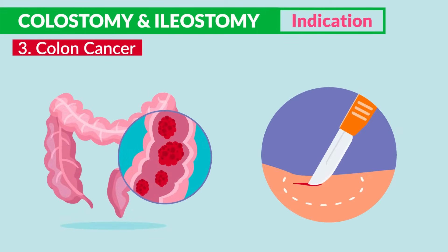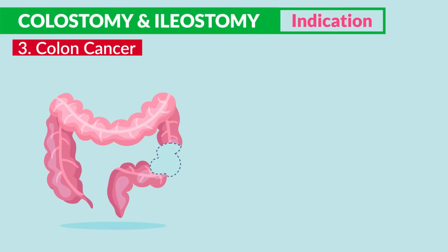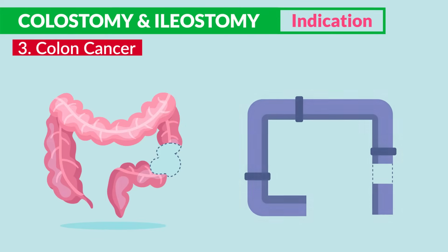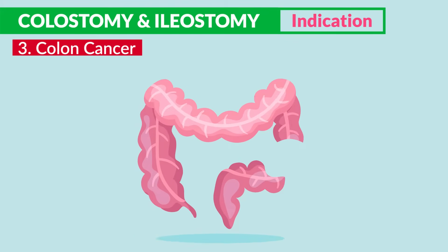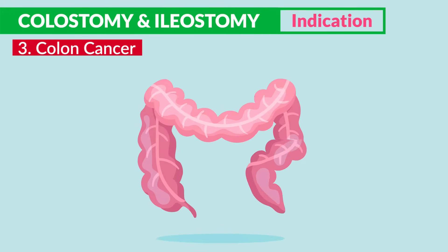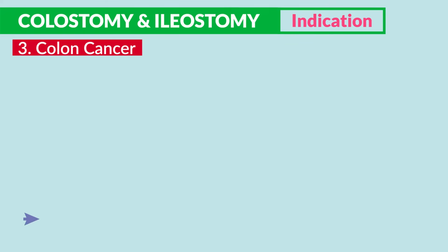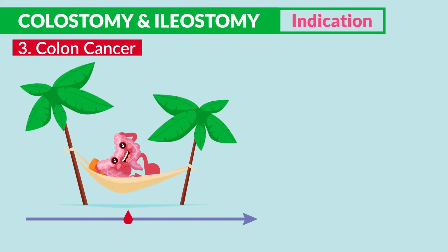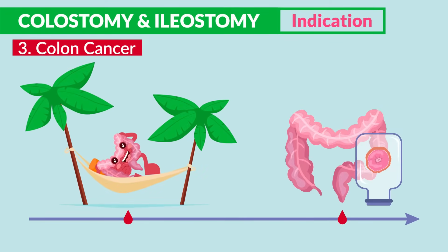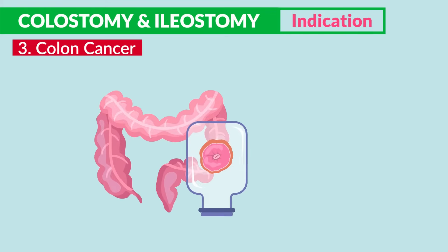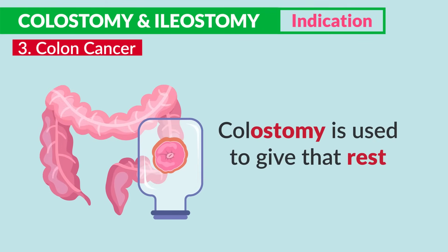Colon cancer is another indication, where surgery is done to remove the cancerous part of the colon — essentially cutting the colon out like cutting out a pipe in a drainage system. Eventually the healthy parts of the colon will be reattached back together, but before that happens, we have to give the bowel some rest, so a temporary colostomy bag is used.